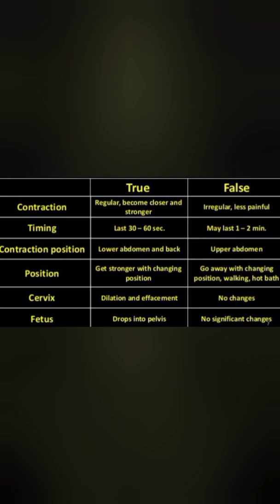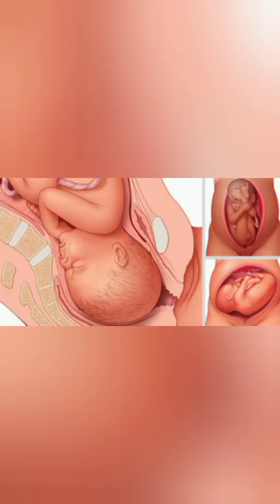False labor pain is generally relieved by analgesics. It corresponds to Braxton Hicks contractions — painless contractions with simultaneous hardening of the uterus that are irregular and do not increase in frequency or regularity. In true labor pain, the pain is more often felt in the front of the abdomen, radiating toward the thigh.